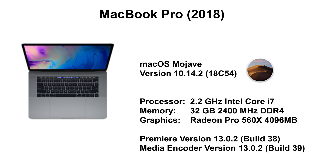We're also running the 2018 MacBook Pro that we did in the last tests, using again the latest version of the OS and Adobe Premiere and Encoder. This has the 2.2 gigahertz Intel Core i7, 32 gigabytes 2400 megahertz DDR4 RAM, and the Radeon Pro 560X with four gigabytes of VRAM. So, is it better to switch to Metal yet? Let's take a look.